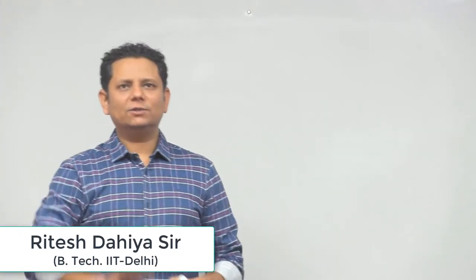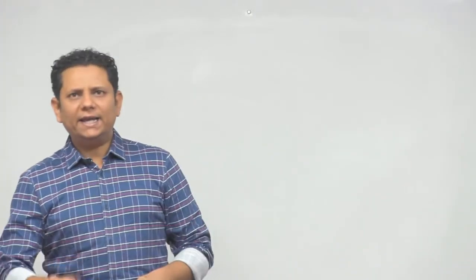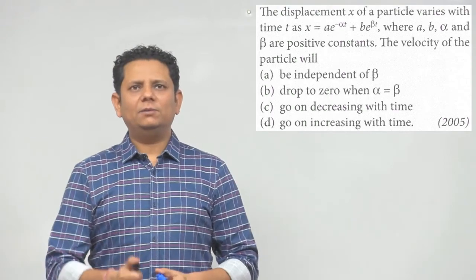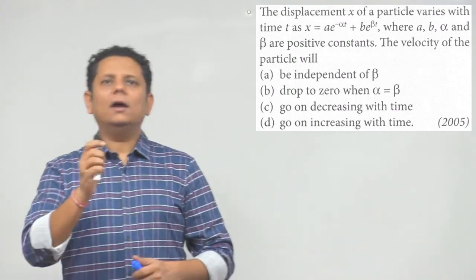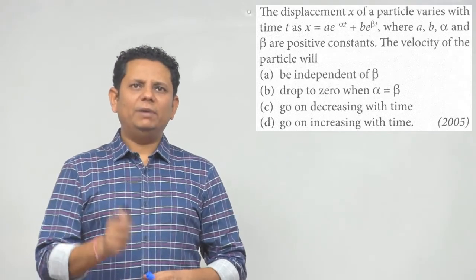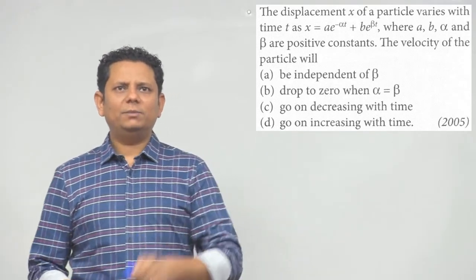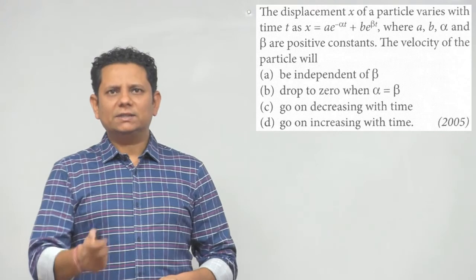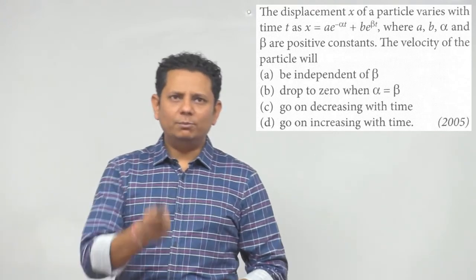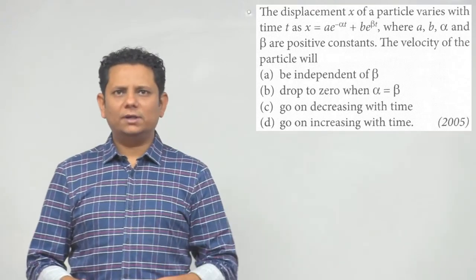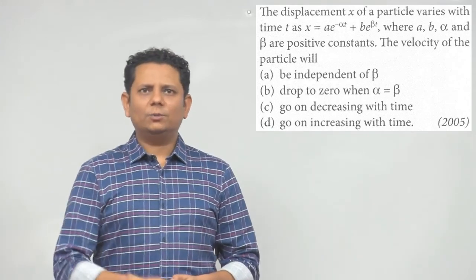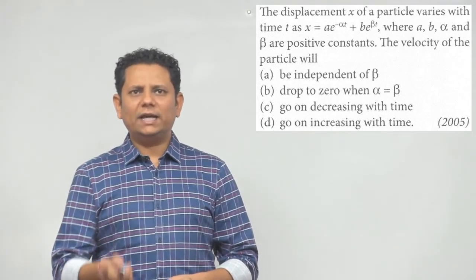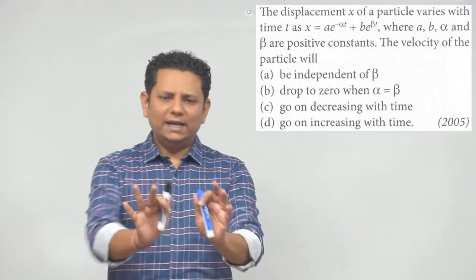Next question, 2005 question says the displacement x of a particle varies with time t as x is equal to a e to the power minus alpha t plus b e to the power beta t, where a, b, alpha, beta are positive constants. The velocity of the particle will: (a) be independent of beta, (b) drop to zero when alpha is equal to beta, (c) go on decreasing with time, (d) go on increasing with time.